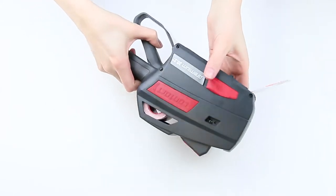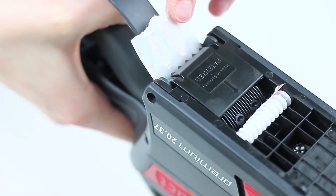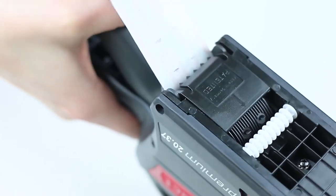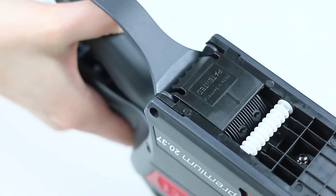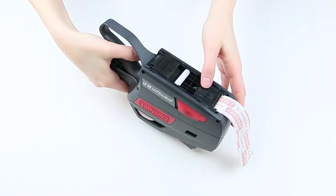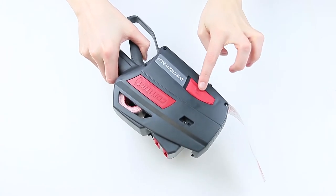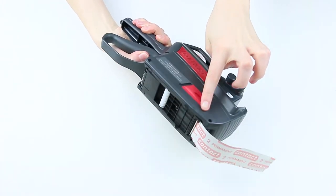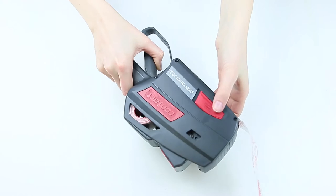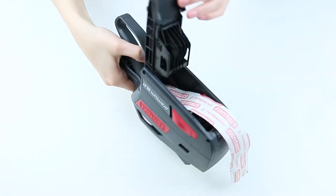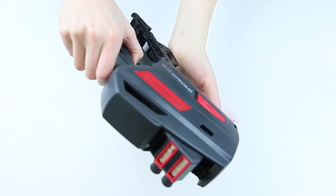Then, squeeze the grip a few times to remove the rest of the backing paper. Push back the red caps on the side to open the bottom. Now, you may remove the rest of the label roll.